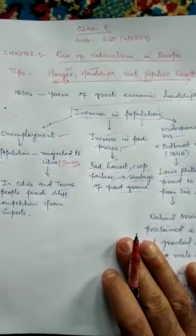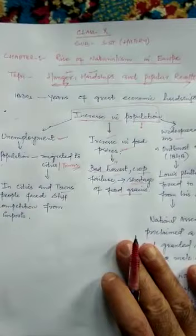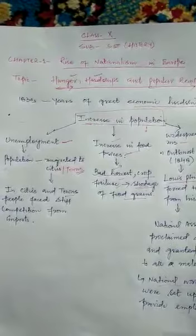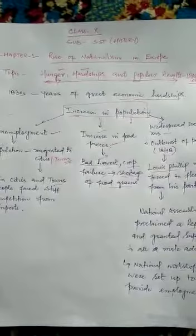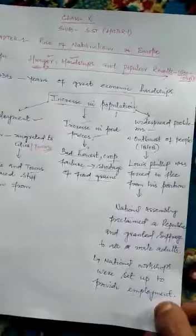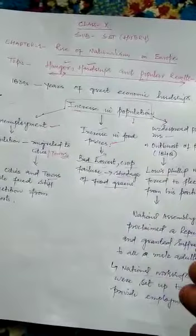In the first video we discussed the July Revolution of 1830, where Louis Philippe was made constitutional monarch of France. Here you will also learn why Louis Philippe, who accepted to be the constitutional monarch of France, would later be removed from that position.